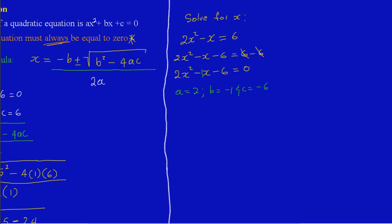Now, if we're solving by using our quadratic formula, let's make a note of our equation here. Our equation is: x is equal to minus b, plus or minus the square root of b squared minus 4ac, all over 2a.